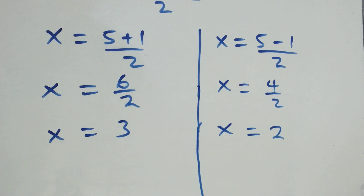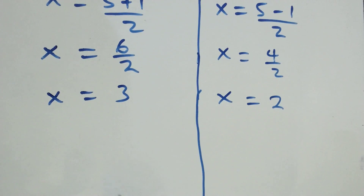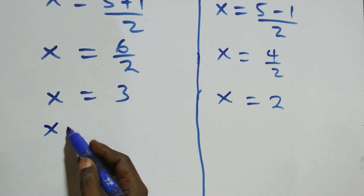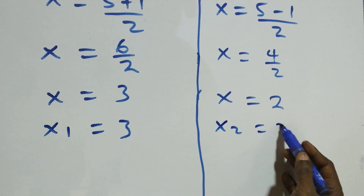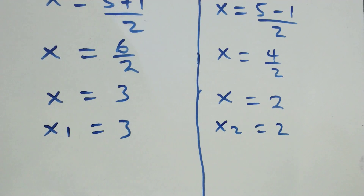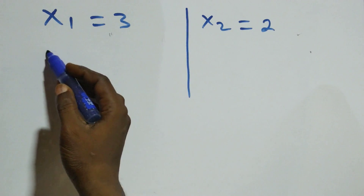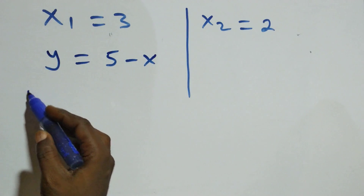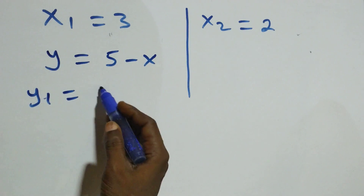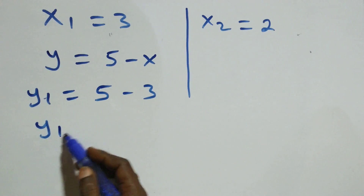We now have two values: x₁ equals three and x₂ equals two. To find the corresponding y values, we use equation three, which is y equals five minus x. For x₁ equals three: y₁ equals five minus three, which gives y₁ equals two.